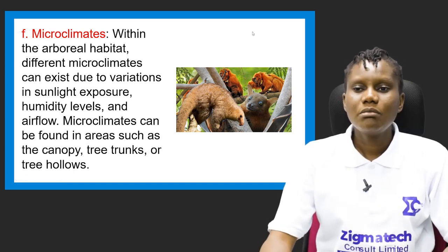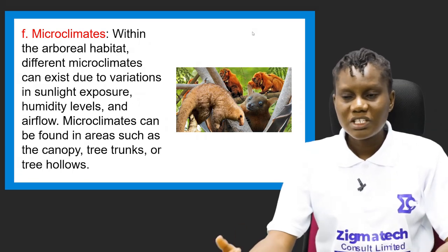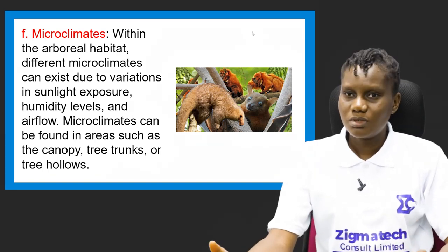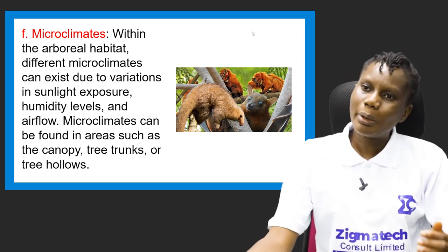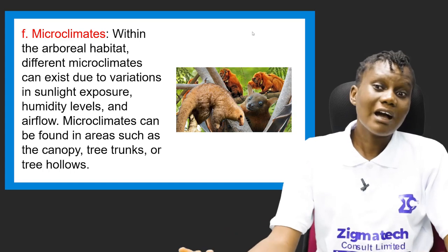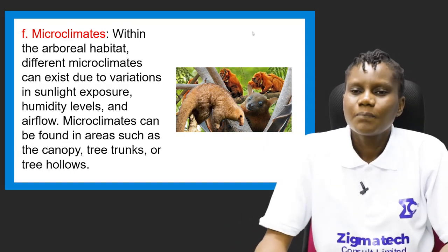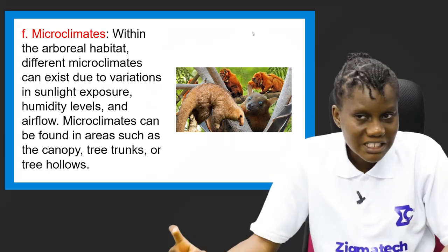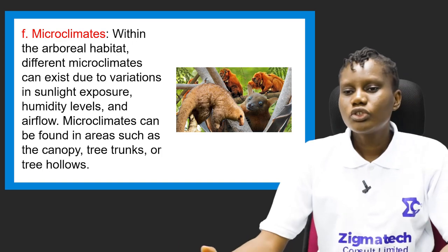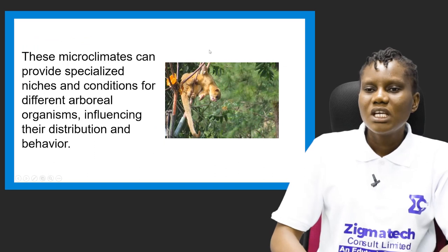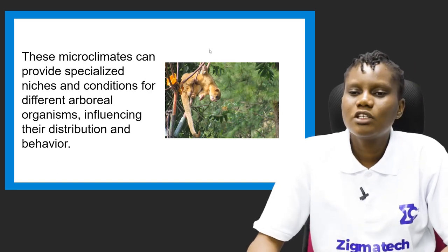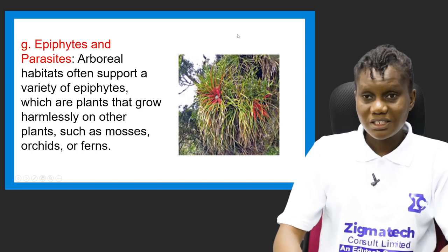The sixth factor is microclimates. Even within an arboreal habitat, different microclimates can exist due to variations in sunlight exposure, humidity levels, and airflow. For example, in a dense canopy, sunlight may not penetrate well, limiting certain organisms. Microclimates can be found in areas such as the canopy, tree trunks, or tree hollows, providing specialized niches that influence the distribution and behavior of arboreal organisms.